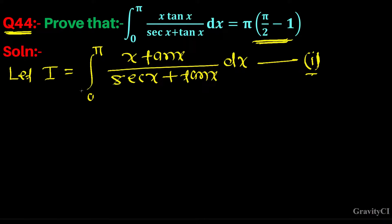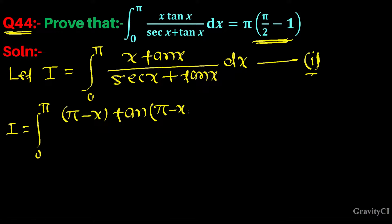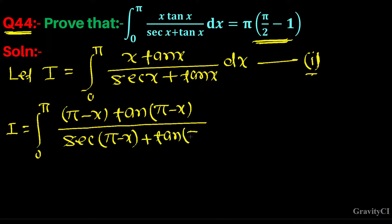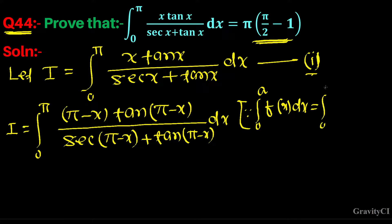To solve this problem we will use the definite integral property: integral from 0 to a of f(x) dx equals integral from 0 to a of f(a - x) dx. So we apply this to get I equal to integral from 0 to π of (π - x)·tan(π - x) / (sec(π - x) + tan(π - x)) dx.